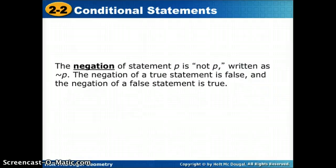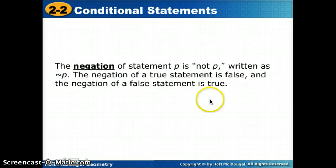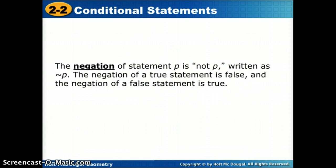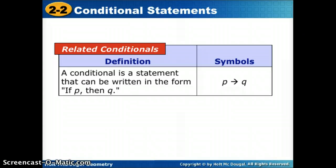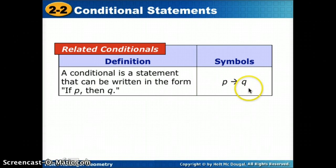Now we're going to talk about what it means to take the negation of a statement, written as not-P using a squiggly line symbol. The negation of a true statement is false, and the negation of a false statement is true — the negation just flips the truth value. A conditional statement is written 'if P then Q,' or in symbols P → Q: hypothesis, then conclusion.